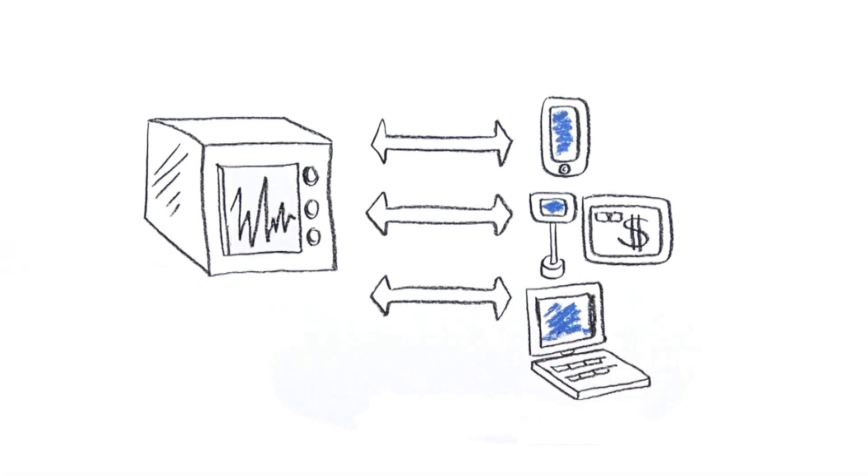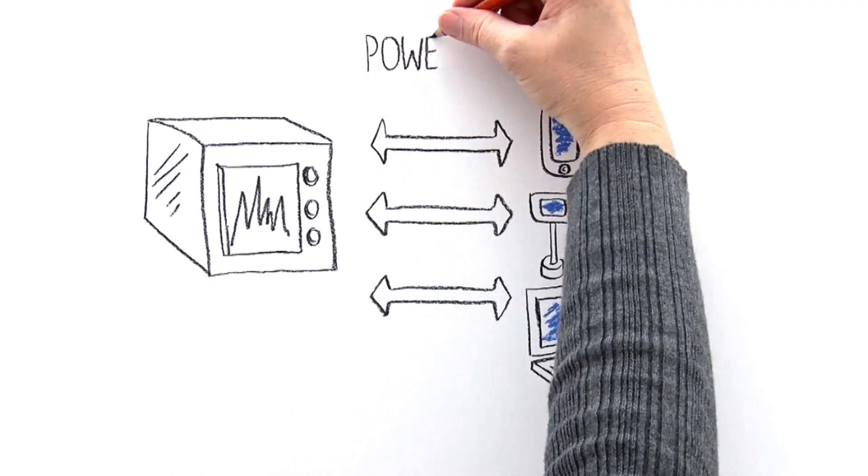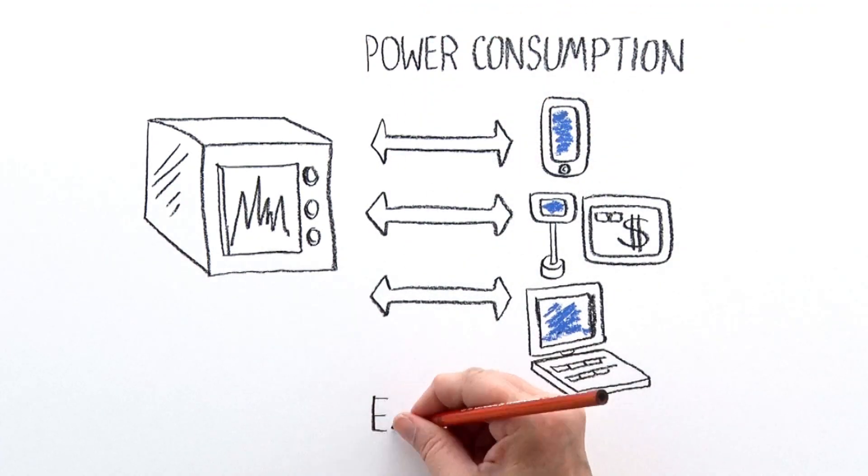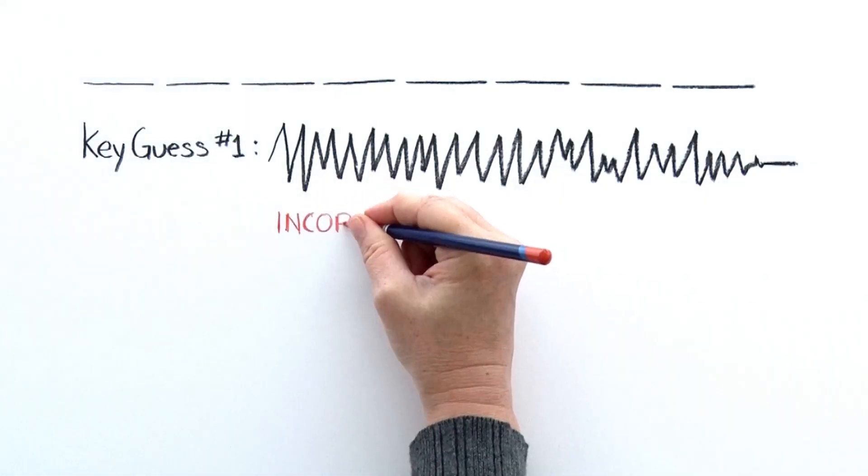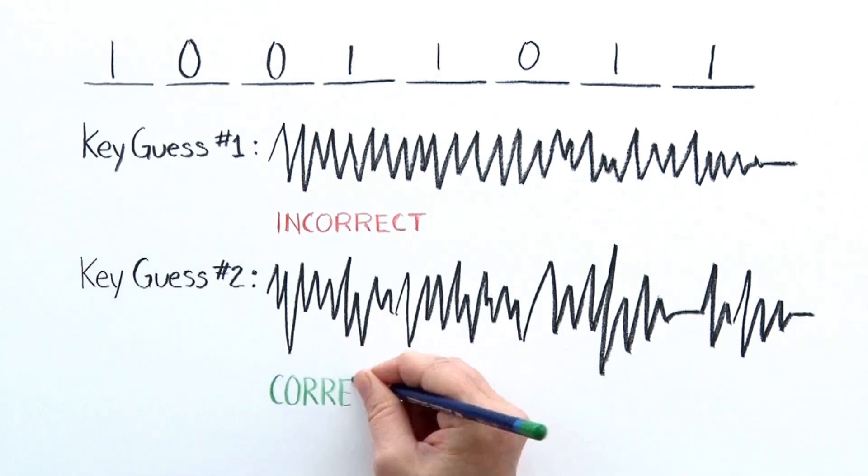DPA is a side-channel attack that is extremely effective, low-cost, and widely known. These attacks use variations in the electrical power consumption or EM emissions of a targeted device, and then breach security in devices by using statistical methods to derive secret keys from crypto algorithms.